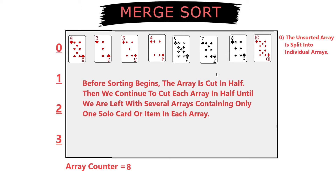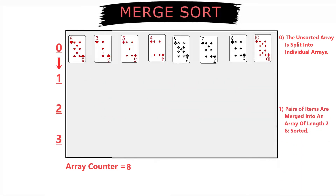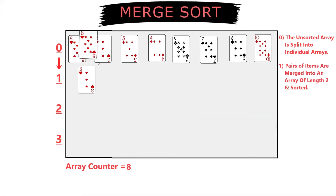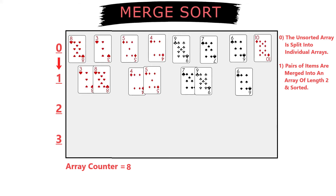Now we begin sorting by taking the first pair of cards, which are the 8 and the 3. Since 3 is less than 8, it will be sorted to the front of the new array that has a length of 2 cards. This process is repeated with the next pair of cards, and then the same with the 9 and 7. 7 will be sorted before 9 in their new array of length 2. And lastly, the 6 and 10 will be placed into an array together.